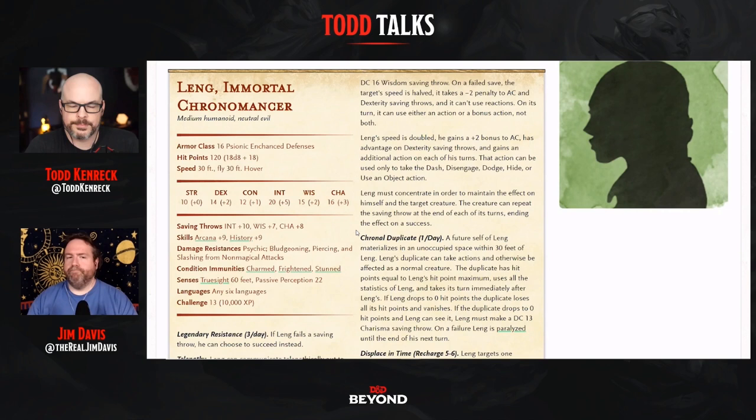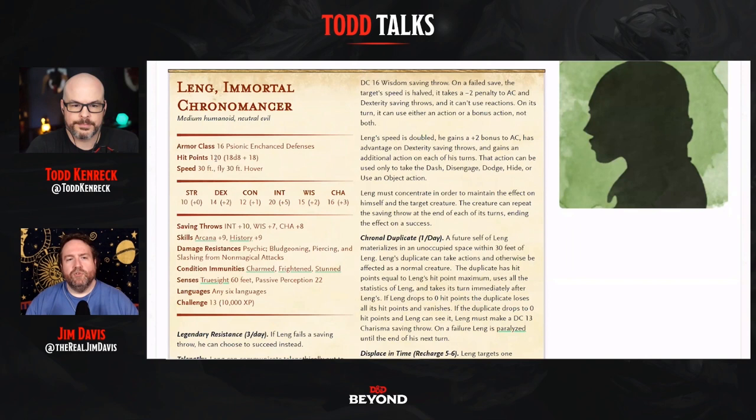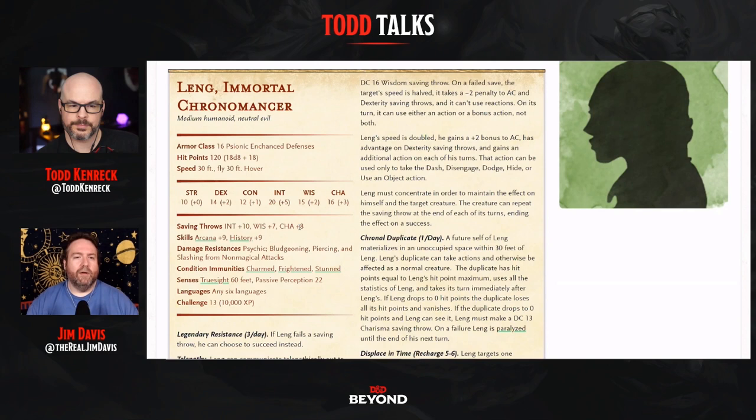Looking at his stat block: AC 16 — respectable for a psionic mage type. Fly speed of 30 with Hover. 120 hit points. He's got resistance to bludgeoning, piercing, and slashing from non-magical attacks. A nice array of saving throw proficiencies — probably not going to land a mental spell on him, as befits a psychic chronomancer, but physically he's not very resilient: +2 to Dex saves and +1 to Constitution saves.